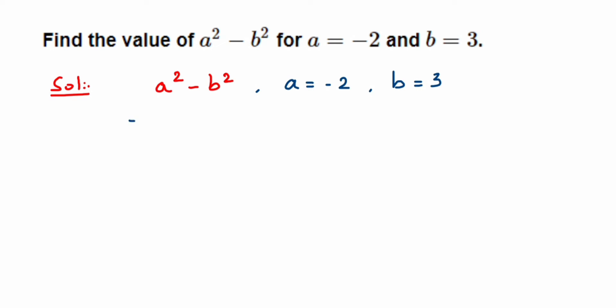Now we're going to simply substitute in place of a minus 2, so this will be equal to minus 2 whole squared. Then minus, and again in place of b we'll substitute 3, so it's 3 squared.